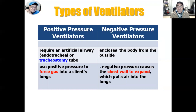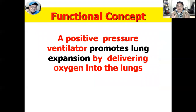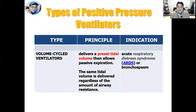There are two general types of ventilators. Positive pressure ventilators require an artificial airway like an endotracheal tube or tracheostomy tube and are used to force gas into the client's lungs. Negative pressure ventilators enclose the body from the outside — like a hyperbaric oxygen therapy machine — and create negative pressure that causes the chest wall to expand, pulling air into the lungs. Positive pressure ventilators promote lung expansion by delivering oxygen directly to the lungs.